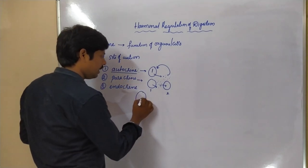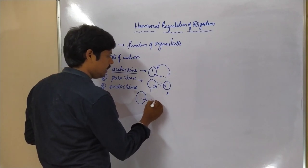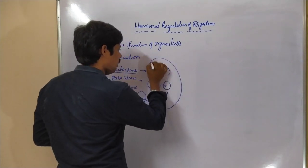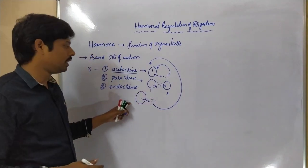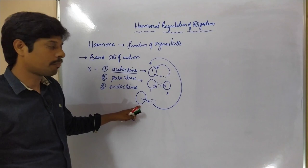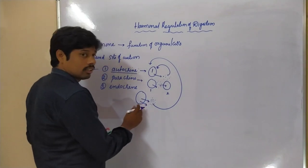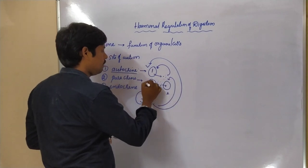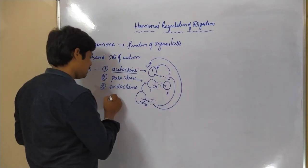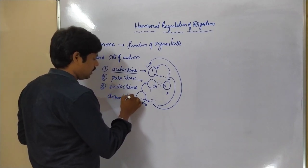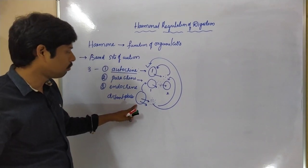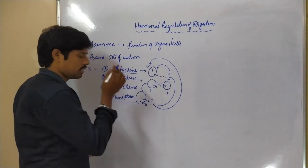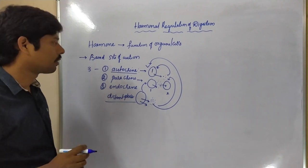The endocrine situation is a condition where the organ or cell which produces the hormones — these hormones act on cells that are far away from where secretion started. The hormones secreted at one place move to a distant place, and the action occurs there. That is called an endocrine situation.